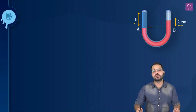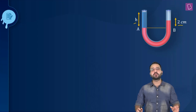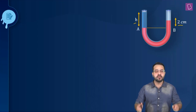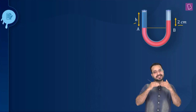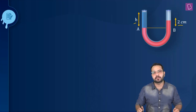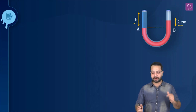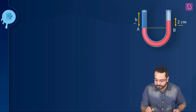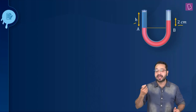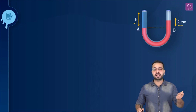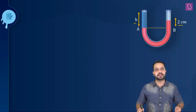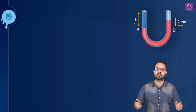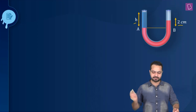The concept here is that for a liquid which is stationary, which is in equilibrium, for the same liquid at the same point or at the same level, the pressure has to be the same. This means that the pressure at point A and the pressure at point B has to be the same. We have to find out the pressure at point A, pressure at point B, and equate them. It is as simple as that.